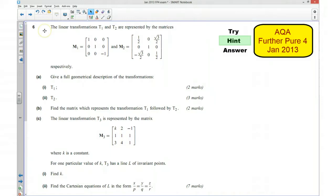Okay, so for question 6 we are given two matrices and we're told that they're transformations represented by these matrices T1 and T2. We want to give a full geometrical description of these transformations. So T1 would be represented by this matrix here. If you have a look, you might spot that the x and the y are going to be invariant, and actually the only thing that's going to change are the z coordinates, which are going to become negative. So think about what transformation makes that happen.